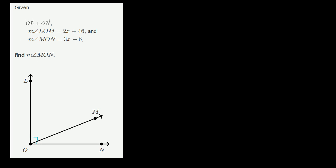Then they tell us that the measure of angle LOM is equal to 2x plus 46. So this angle right over here is equal to 2x plus 46. And then the measure of angle MON is equal to 3x minus 6, so this angle right over here is 3x minus 6.